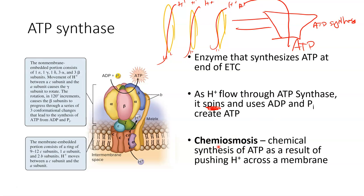But chemiosmosis is the flow of chemicals, or in this case, ions, from high to low. So just keep that in mind. The term chemiosmosis is that creation of ATP as a result of pushing those hydrogen ions through that ATP synthase.